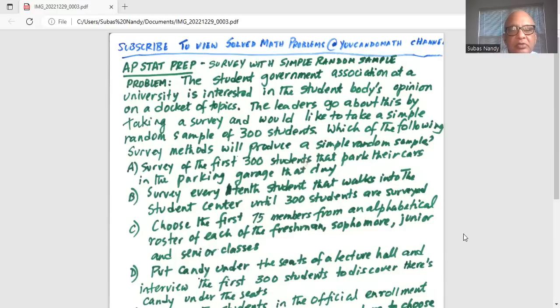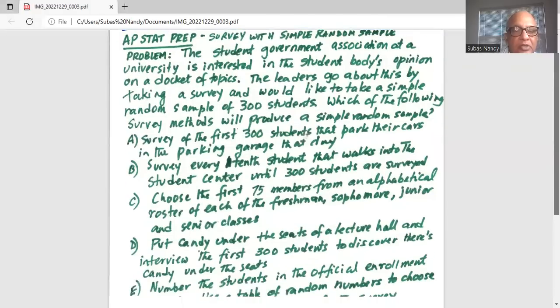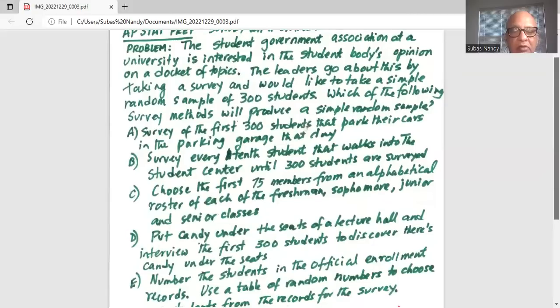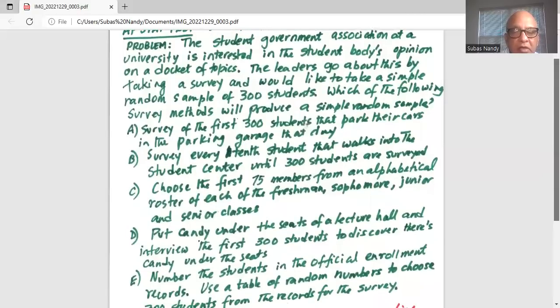Option C: choose the first 75 members from an alphabetical roster of each of the freshmen, sophomore, junior and senior classes. Option D: put candy under the seats of a lecture hall and interview the first 300 students to discover there's candy under the seats.